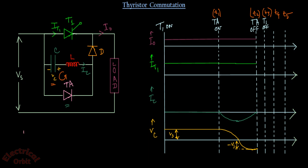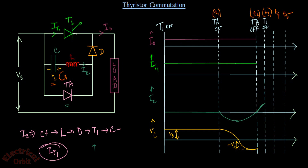Now IC will try to flow from C plus → L → D → T1 → C minus, opposing the IT1 current. So by convention, the value of IC will now try to increase in the positive direction. This IC is decreasing IT1 until IT1 goes below the holding current. When IT1 goes to zero, the thyristor T1 is turned off.